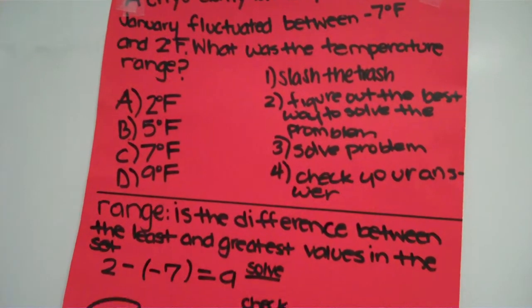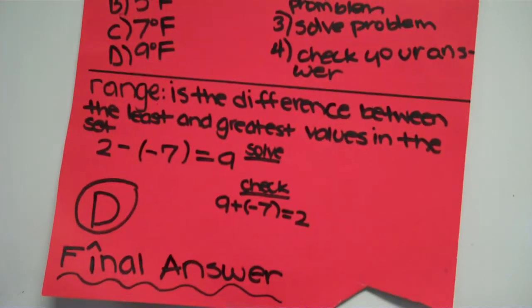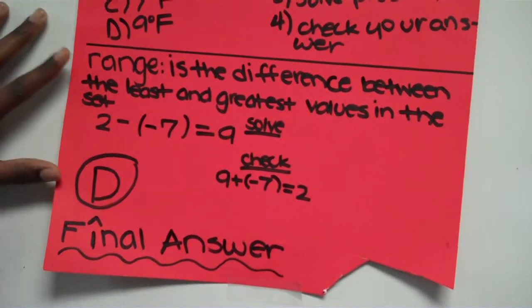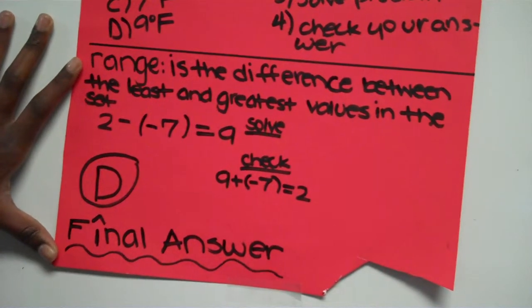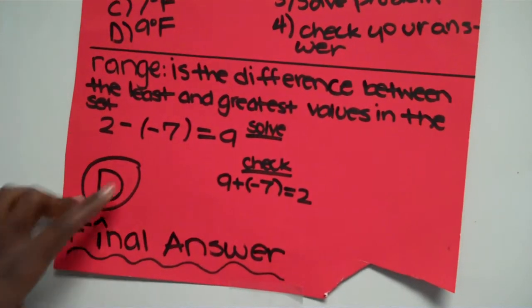So, range is the difference between the least and greatest values in a set. So I would do 2 minus negative 7 equals 9. And that's how I solved my problem.